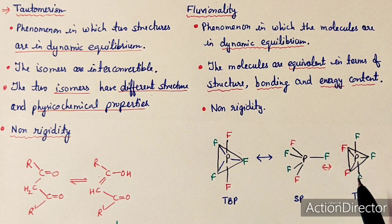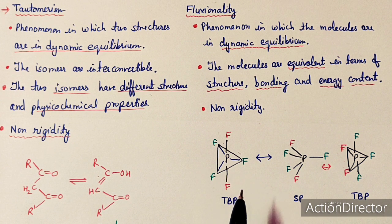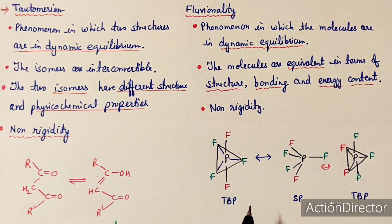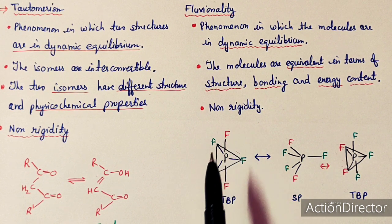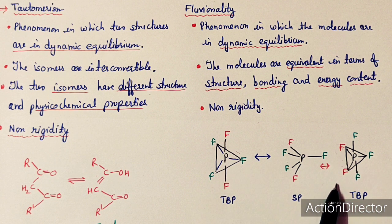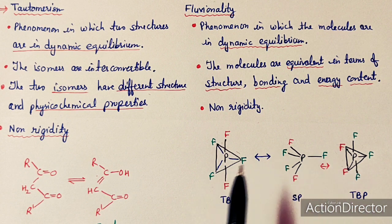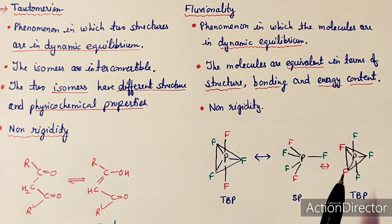This trigonal bipyramidal geometry converts back into trigonal bipyramidal geometry and the equilibrium is so fast that it cannot be detected easily. This phenomenon for five-coordinated compounds is known as Berry pseudorotation, which you have already studied in MSc first semester. The two molecules are equivalent, having the same energy and structure, so this is called fluxionality and these molecules are also called non-rigid molecules.